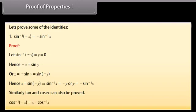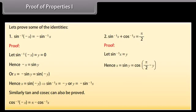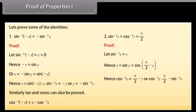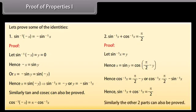cos⁻¹(−x) = π − cos⁻¹ x. Second, sin⁻¹ x + cos⁻¹ x = π/2. Proof: Let sin⁻¹ x = y. Hence x = sin y = cos(π/2 − y). Hence cos⁻¹ x = π/2 − y, or cos⁻¹ x = π/2 − sin⁻¹ x. Hence sin⁻¹ x + cos⁻¹ x = π/2. Similarly, the other two parts can also be proved.